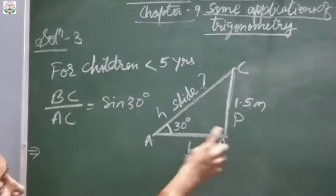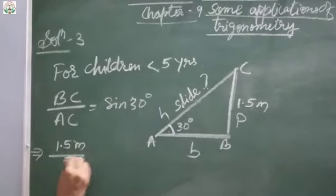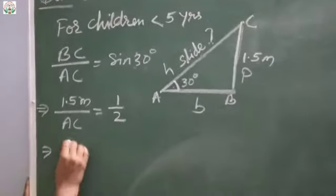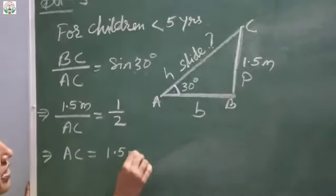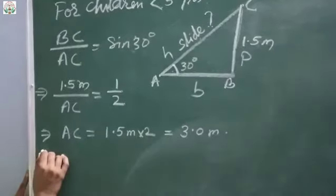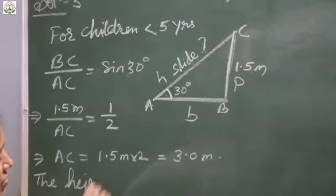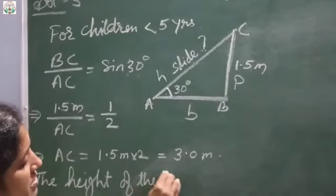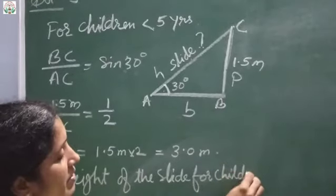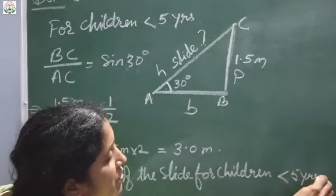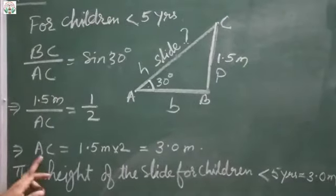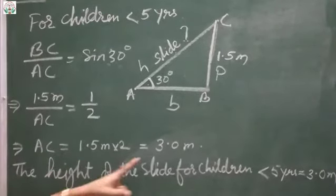BC is given as 1.5 meter. So 1.5 upon AC equals to sine 30, which is 1 upon 2. Cross multiplying, AC equals to 1.5 meter into 2, which equals to 3 meter. So the length of the slide for children below 5 years equals to 3 meter.